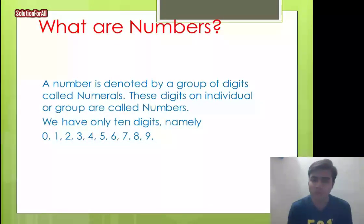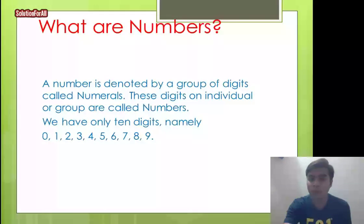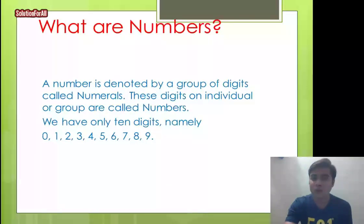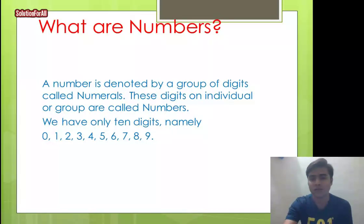The first concept: what are numbers? The immediate answer that comes to mind is zero, one, two, three — and that's exactly right. A number is denoted by a group of digits called numerals. We have only 10 digits: 0, 1, 2, 3, 4, 5, 6, 7, 8, and 9. All other numbers, like 11 or 29, are formed using combinations of these digits.